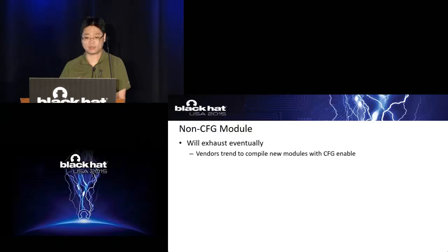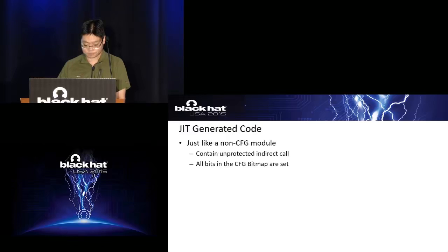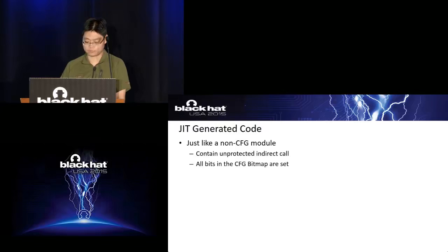However, like any compiler-involved mitigation, non-CFG modules will be exhausted eventually since there is a chance to compile new modules with CFG enabled, so there will be fewer and fewer non-CFG modules. The second attack surface is JIT-generated code. JIT-generated code is just like non-CFG modules — if it contains indirect calls, they are unprotected, and all bits in the generated code region have the corresponding bit set in the CFG bitmap.